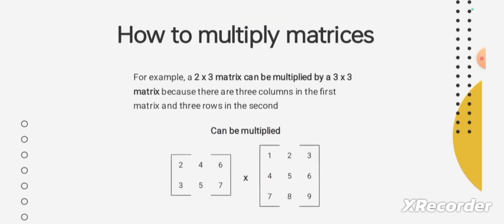Here is an example. A 2x3 matrix can be multiplied by a 3x3 matrix because there are 3 columns in the first matrix and 3 rows in the second matrix. The main condition for matrix multiplication is that the columns of the first matrix should be equal to the rows of the second matrix. If that is true only, we can multiply the two matrices.